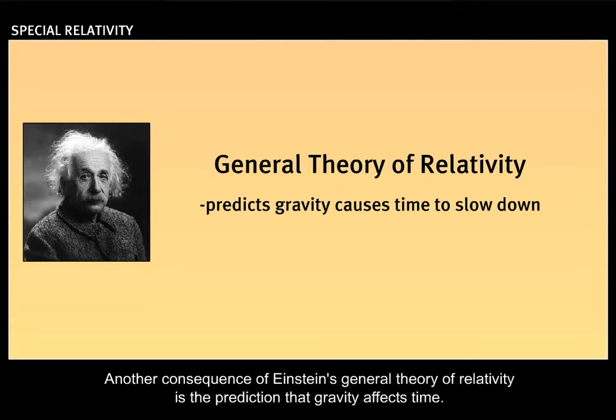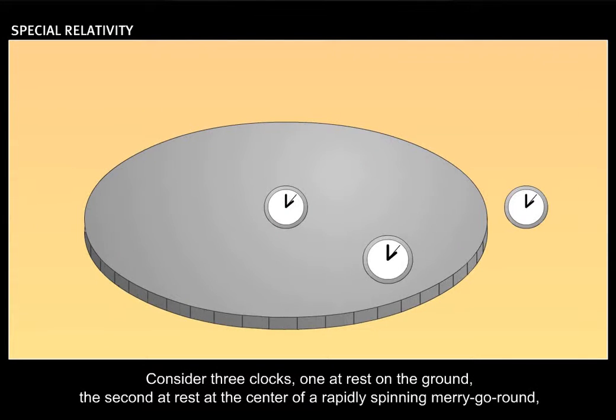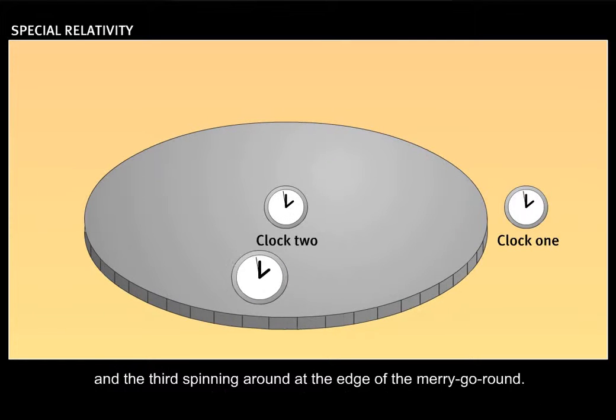Another consequence of Einstein's general theory of relativity is the prediction that gravity affects time. Consider three clocks: one at rest on the ground, the second at rest at the center of a rapidly spinning merry-go-round, and the third spinning around at the edge of the merry-go-round.